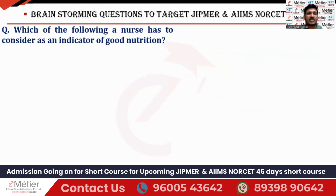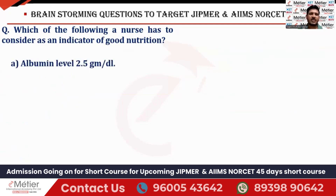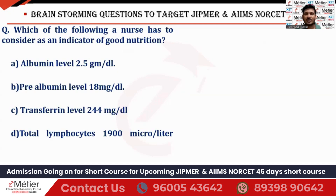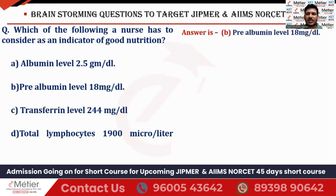The third question asks: which should a nurse consider as an indicator of good nutrition? The options are: albumin level 2.5 g/dL, pre-albumin level 18 mg/dL, transferrin level 244 mg/dL, and total lymphocyte count 1900/microliter. Albumin at 2.5 g/dL is very low — that is seen in malnutrition patients. Transferrin is related to iron metabolism, not directly to nutrition assessment here. The right answer is option B — pre-albumin level 18 mg/dL.